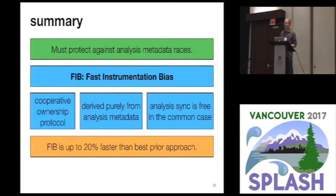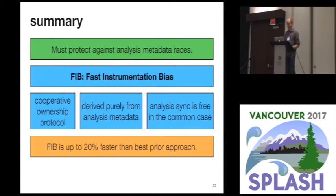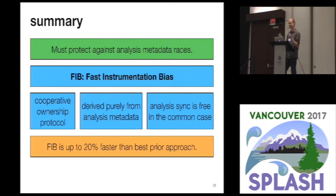In summary, we've attacked the problem of protecting against metadata races in the analysis metadata to provide full accuracy in data race detection. To do that we developed FIB — the Fast Instrumentation Bias Protocol — a cooperative ownership protocol for analysis synchronization that derives its ownership states and much of its ownership logic directly from work and metadata that the data race detector already has, and in the common case provides analysis synchronization for free. Overall, FIB was up to 20% faster than our best prior approach. Thank you — I'll take any questions.